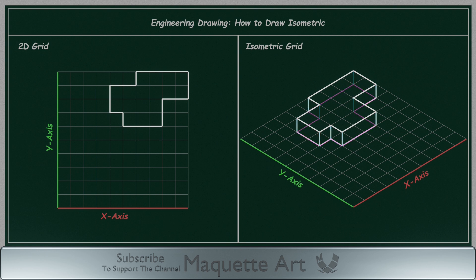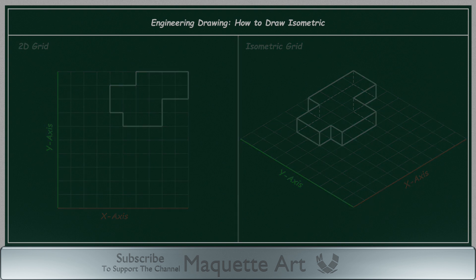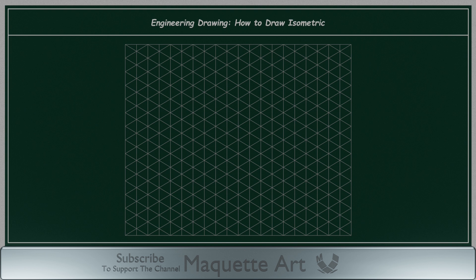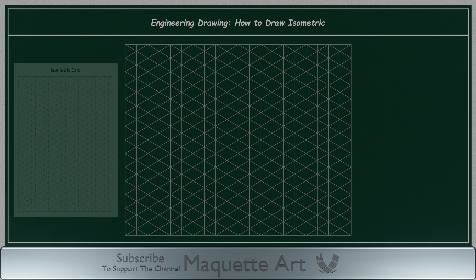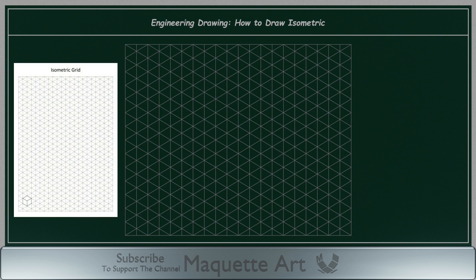Some of the lines will be removed as they are hidden and cannot be seen from this view. Or instead of completely removing the hidden lines, we can draw them as dashed lines. This is the basics of isometric drawings. Understanding this is essential to progress to the next level of drawing more complex shapes, and it will help you understand and visualize orthographic projection as well. The isometric grid is very useful for practice. I added a link in the description for a PDF file of the isometric grid, so you can print it and use it for practice.